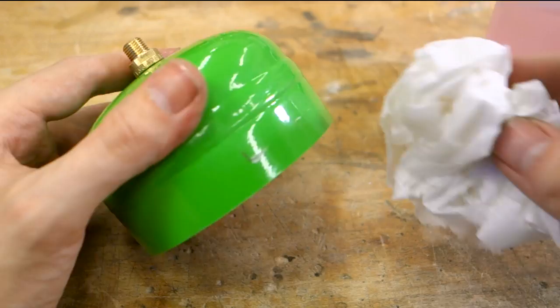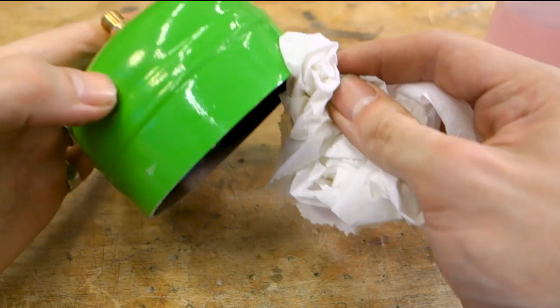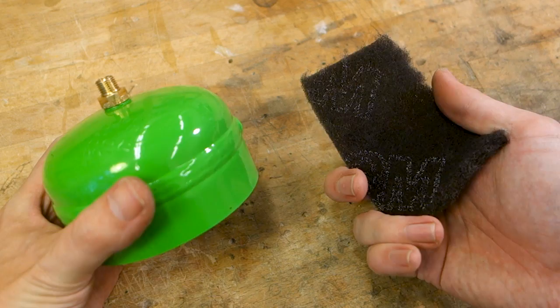Don't use something like acetone, as it will eat into the existing paint. Follow this by scuffing the paint up with a fine scotch brite pad so the new coat of paint will stick better to the base.